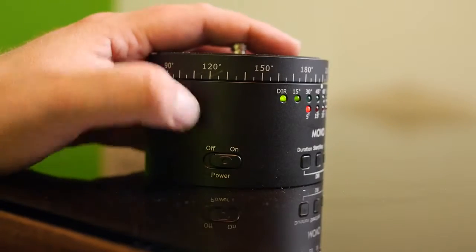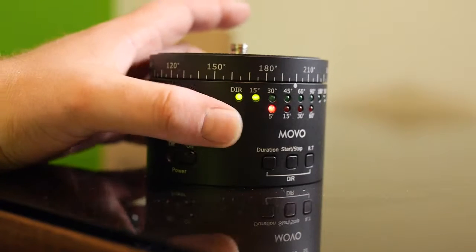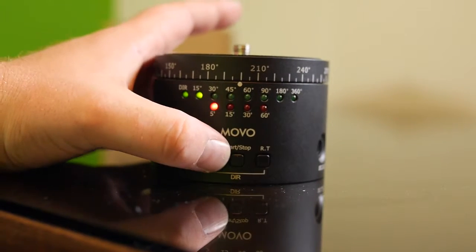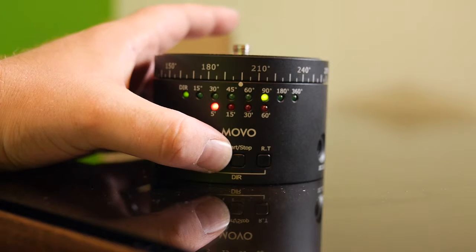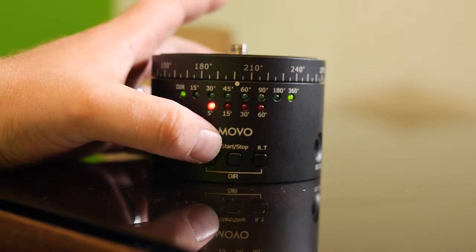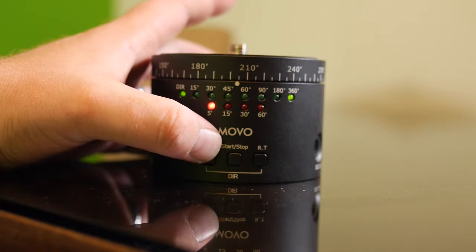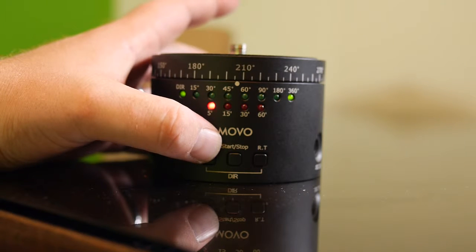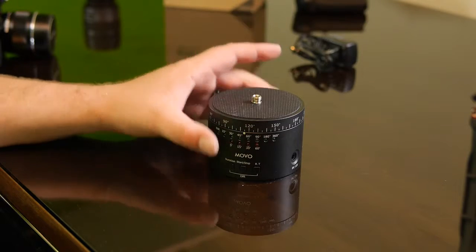We have an on-off switch there on the side and it supports bigger cameras. Now you don't want to go too big. I'm not sure what the weight limit is on this, but I have the Panasonic GH4 and it fit on there just fine. I think you'd probably go a little bit bigger but just not too big.